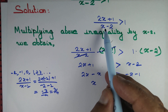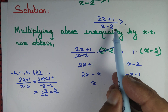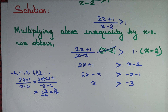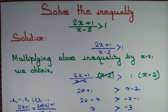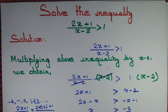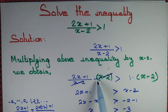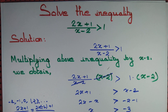We want 2x plus 1 by x minus 2 to be greater than 1, but it is not. So we made a mistake — our approach is not exactly correct. That's because we are multiplying by x minus 2, and if x minus 2 is negative then the inequality is not preserved.